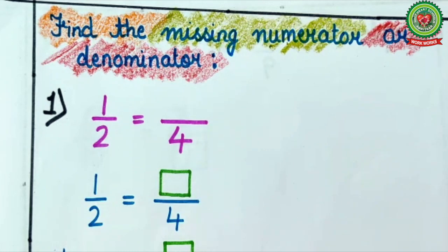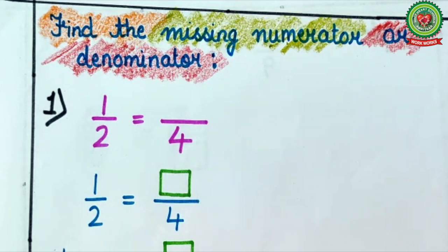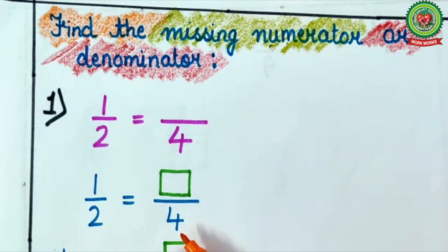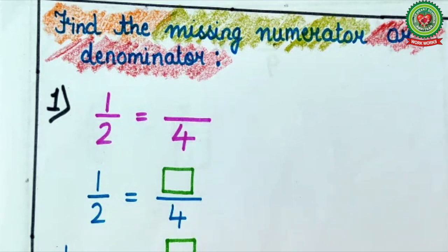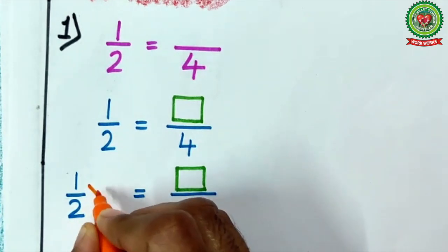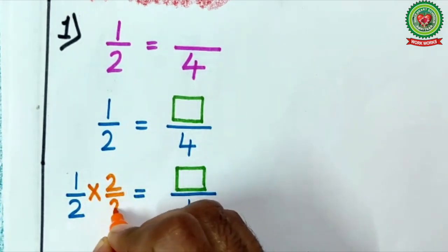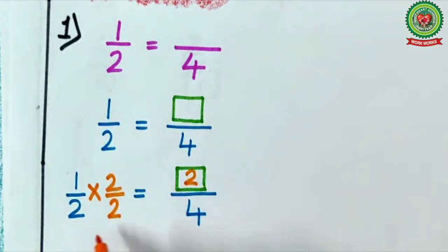Now you will look at the box side. Here the number given in the denominator is 4. We know that 4 is bigger than 2. By which number will I multiply 2 to get 4? I will multiply it by 2. But I can't multiply only the denominator by 2 — I have to multiply the numerator also by 2. So 1 times 2 is 2, and 2 times 2 is 4.